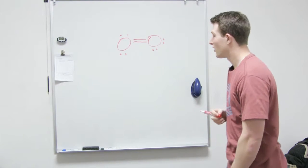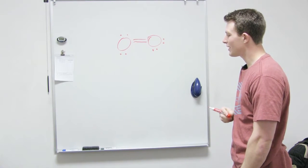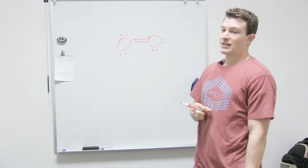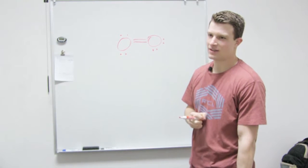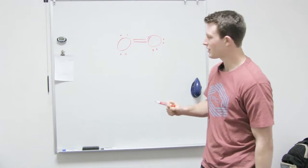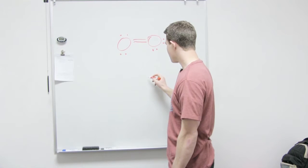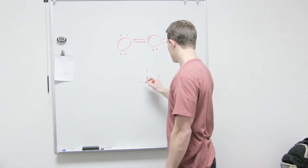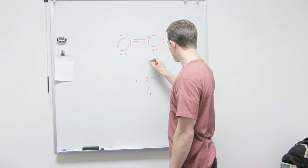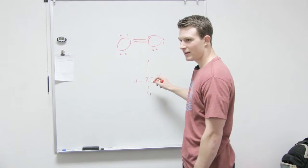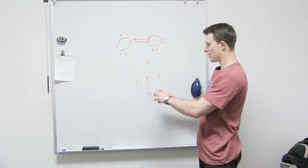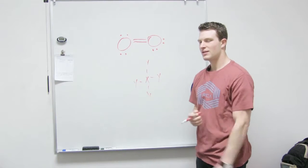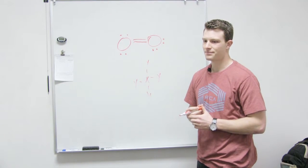Also a good way to look at polarity is if it's a symmetric type molecule. So, if we had this atom in the middle and it had four of these all around it, that's going to be symmetric because they're all going to pull equally and cancel each other out.